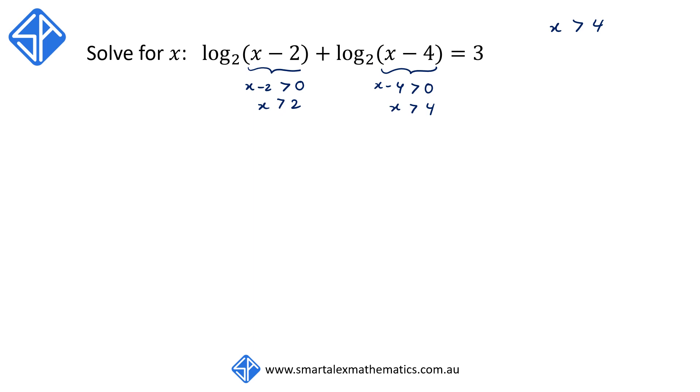Let's start solving the equation. We have log base 2 of x minus 2 plus log base 2 of x minus 4 is equal to 3. We can simplify the left-hand side using the log law. Log base a of m plus log base a of n can be simplified to log base a of m times n. So the left-hand side can be rewritten as log base 2 of x minus 2 times x minus 4 is equal to 3.